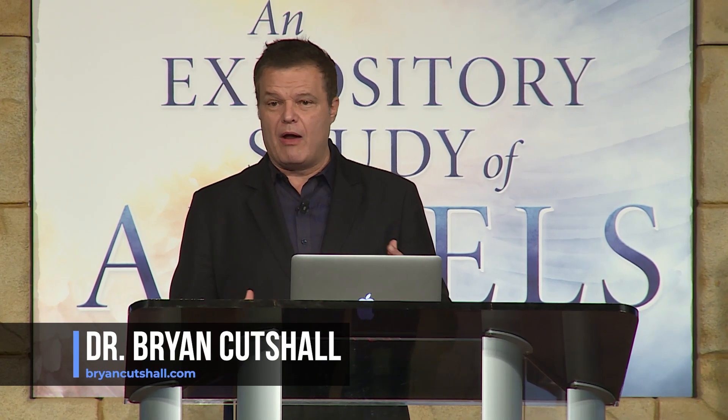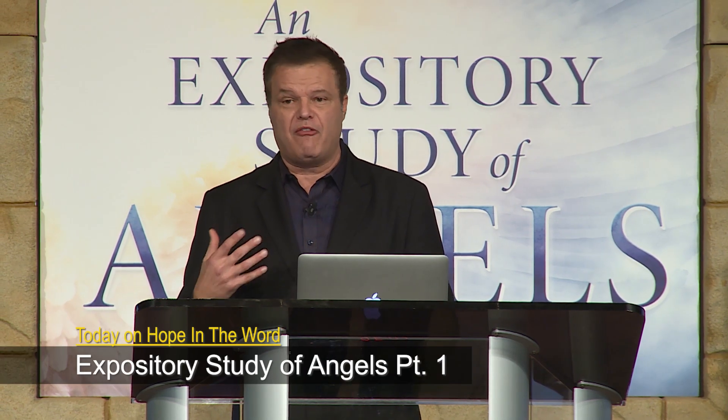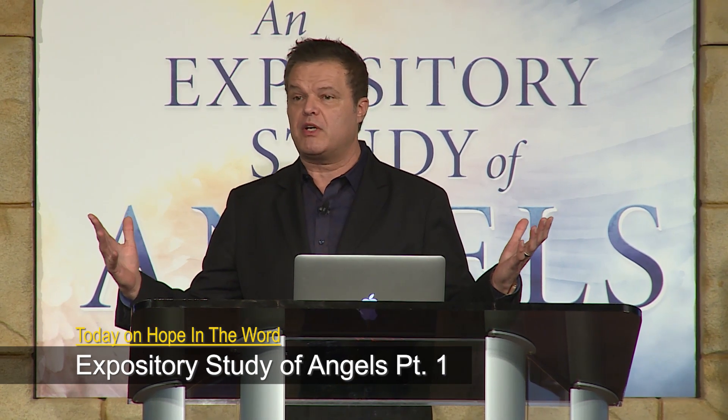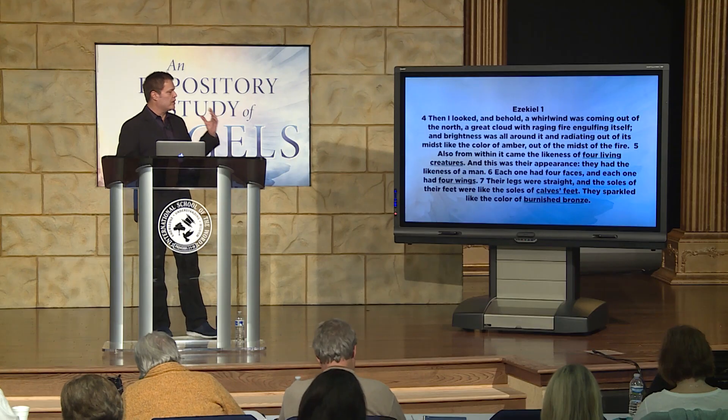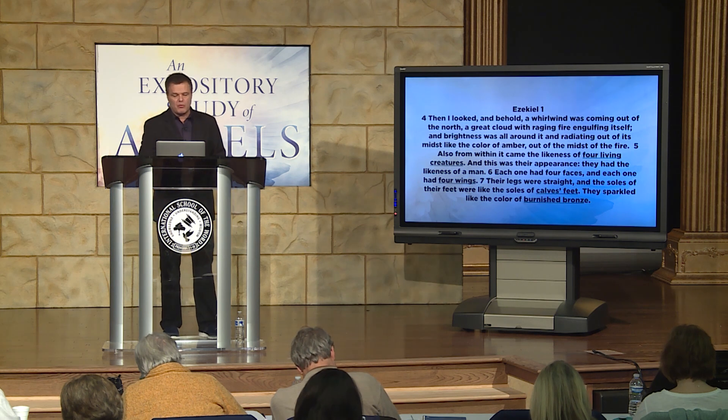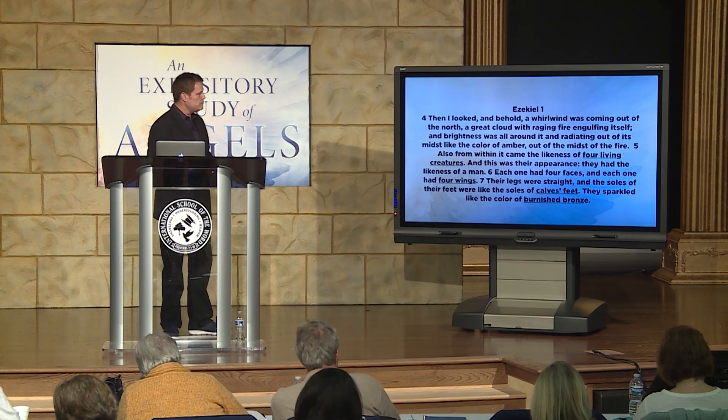Cherubim basically describes an angel that we don't have a classification for — no genre, no definition. It's a new classification of something never seen before, which makes sense because in the Old Testament almost every angel would fall into that category. But there is a particular type of angel called a seraphim that is explicit in scripture, and we're given a lot of information about them.